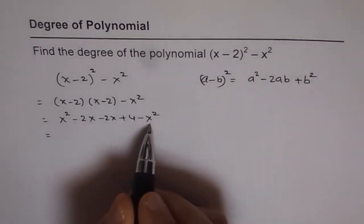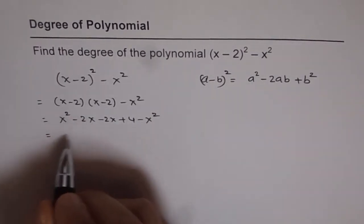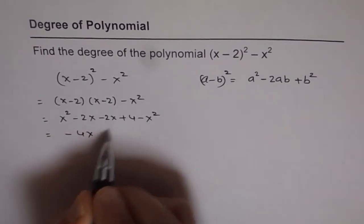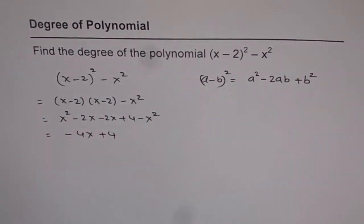x² minus x² is 0. So you are left with -4x + 4. Now this is linear.